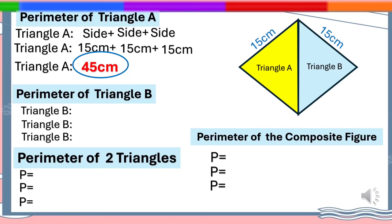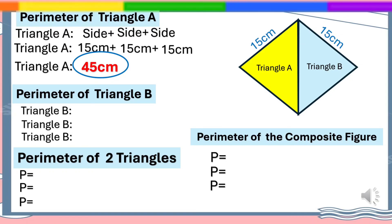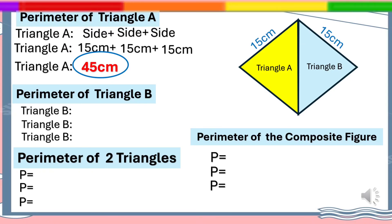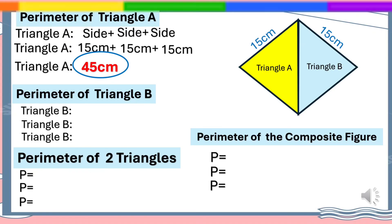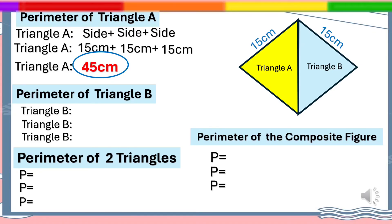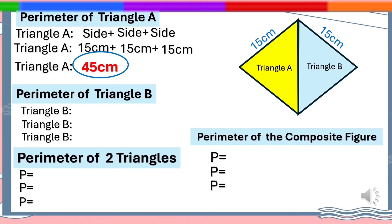Now it's your turn to do your own solution. Calculate the perimeter of Triangle B, solve for the perimeter of the two triangles, and find the perimeter of the composite figure. Let's see if we will have the same answers.